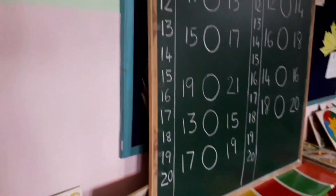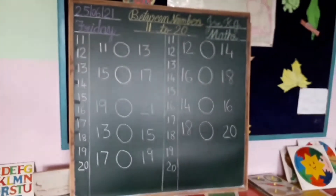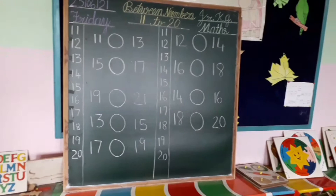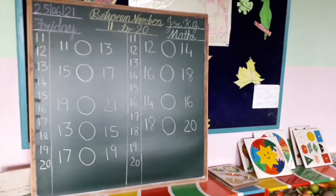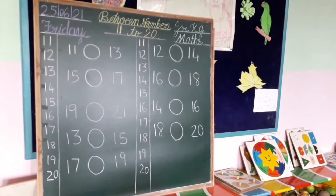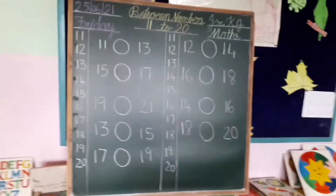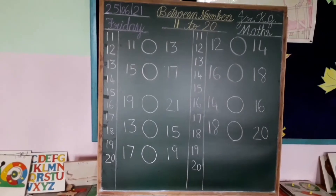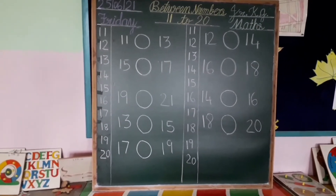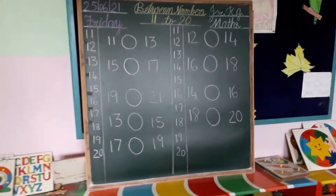So now children, what is the meaning of between numbers? Between numbers means the number that comes between the before and after number — usay between numbers kehate hai.